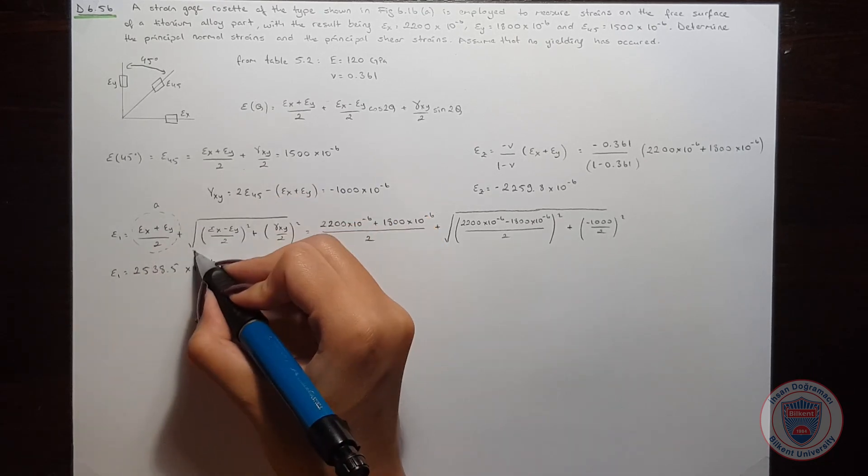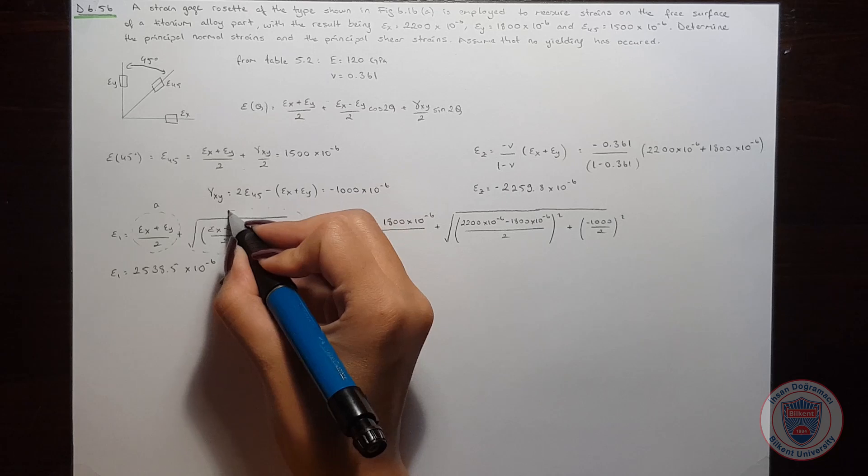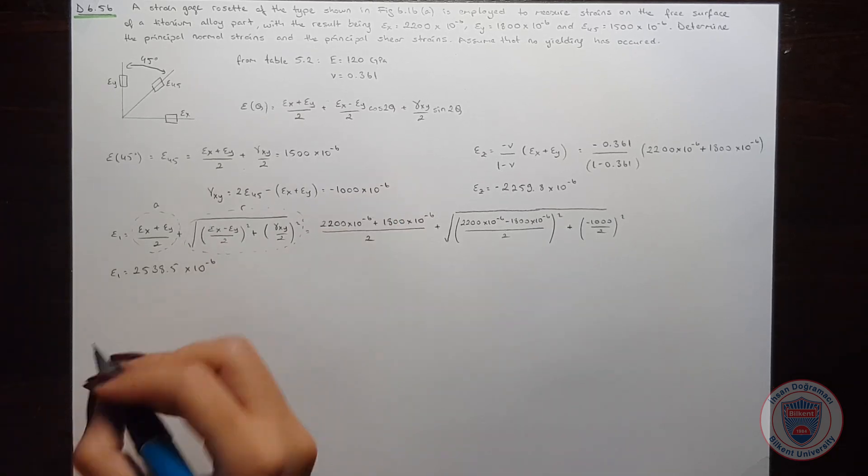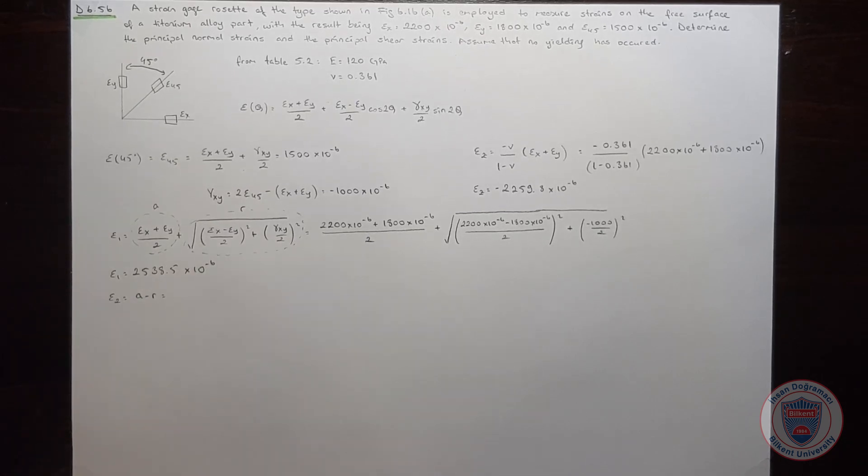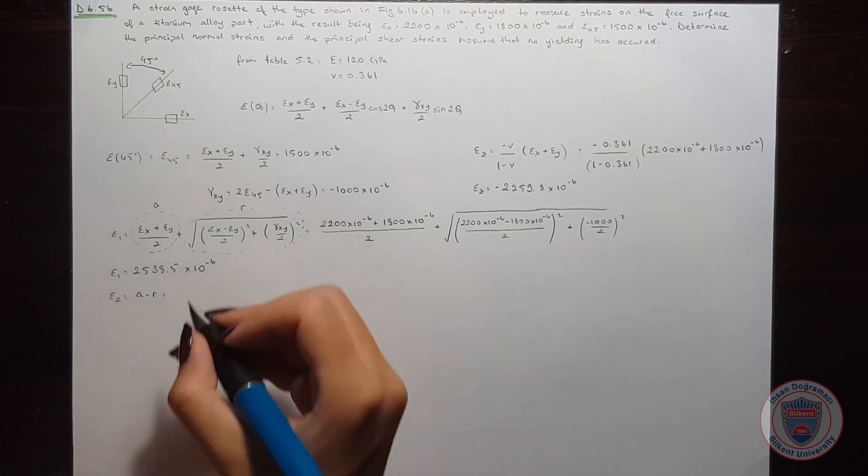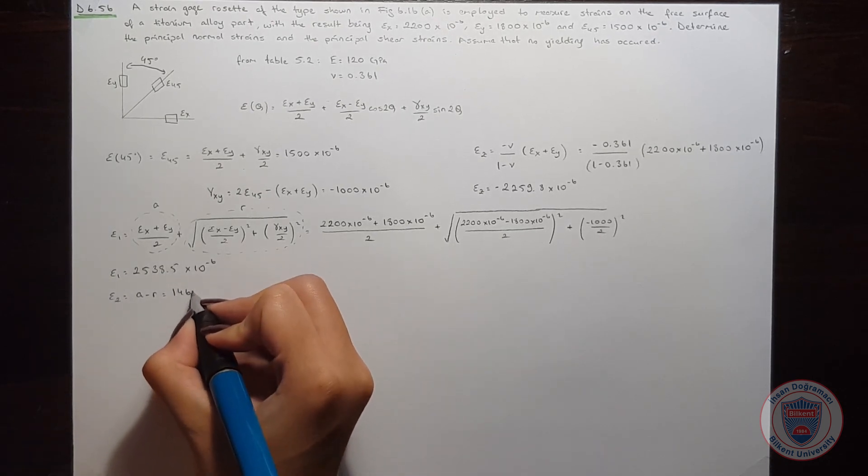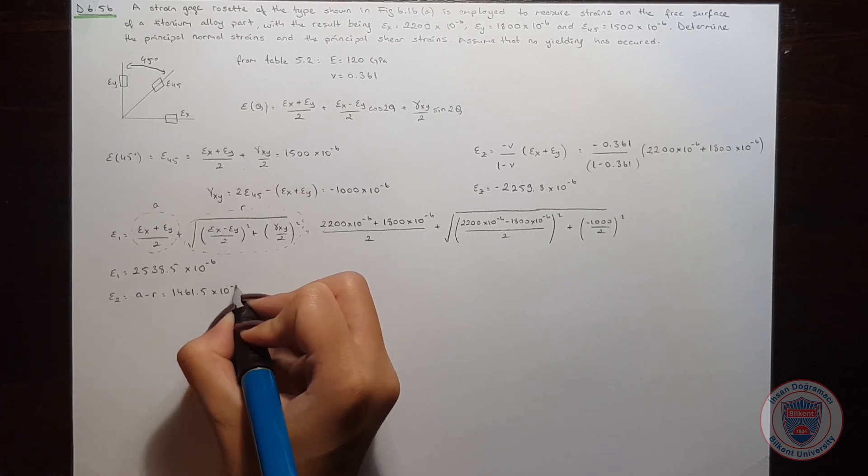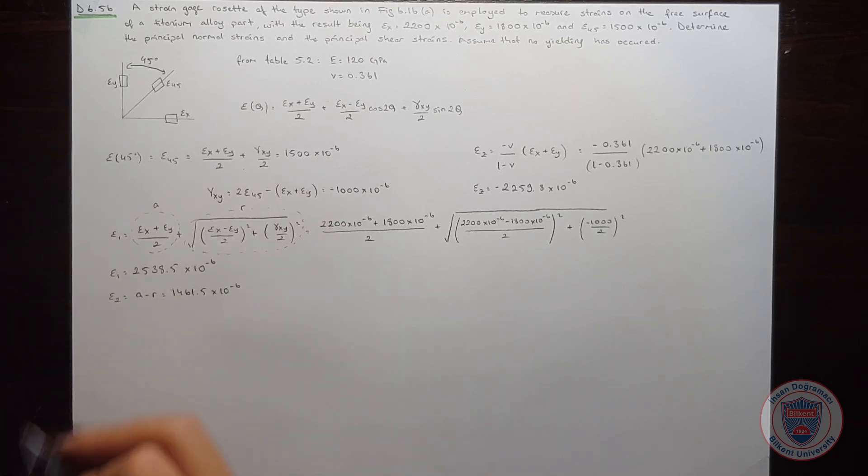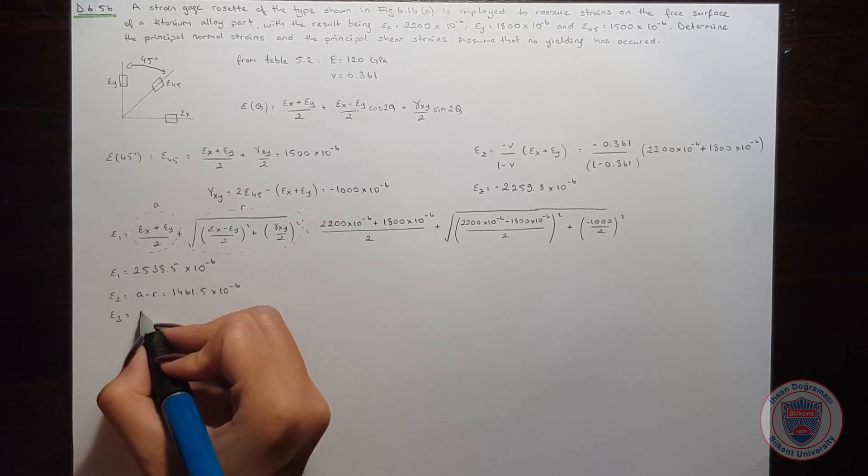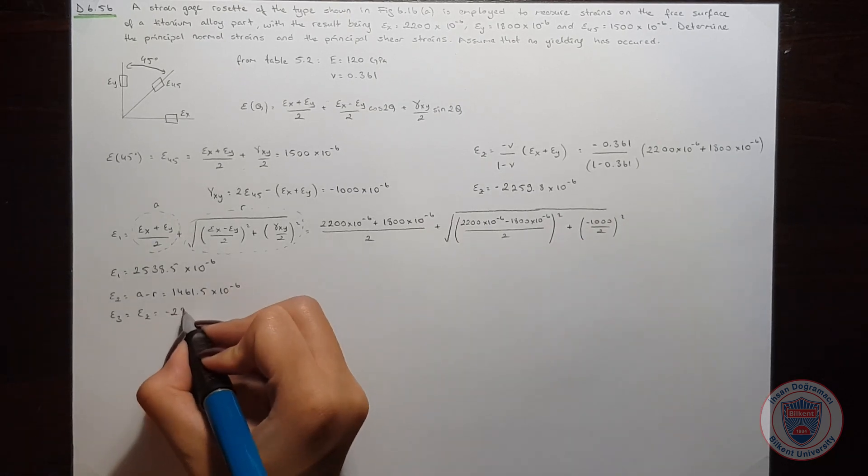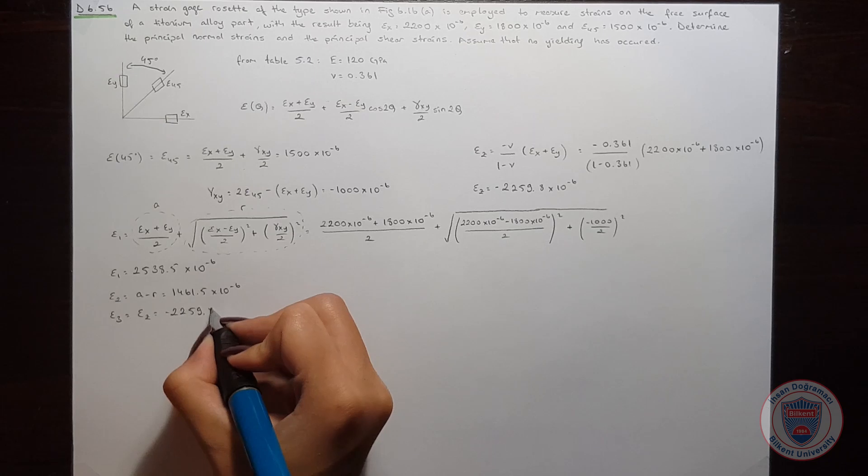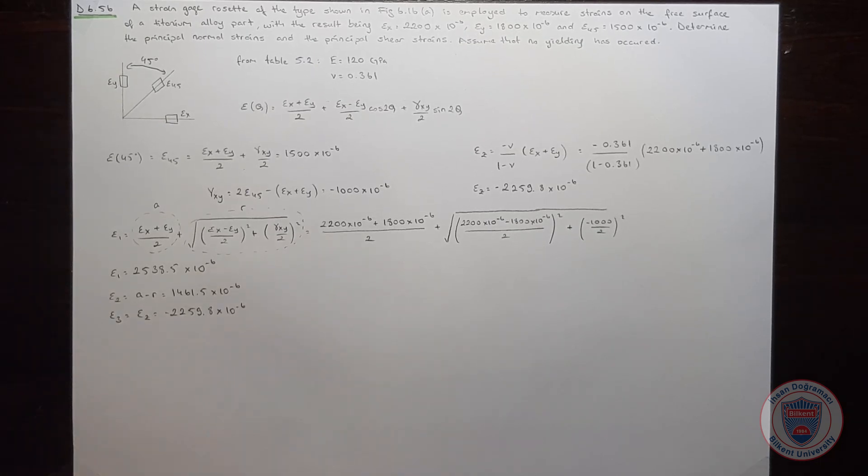Let's say that this is a and this is r, so that ε2 will be a minus r. And when we make the calculations, we will obtain ε2 is equal to 1461.5 times 10 to the power of minus 6. And finally, ε3 will be equal to εz and we calculated it as minus 2259.8 times 10 to the power of minus 6.